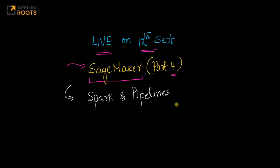In Part 4, we will continue where we left off last time and learn about how to use Spark and Spark MLlib specifically as part of SageMaker, and also how to build pipelines using SageMaker. All of this will be covered through examples.